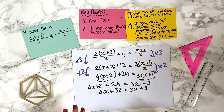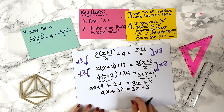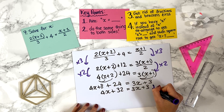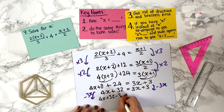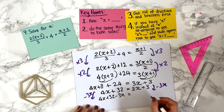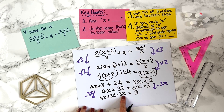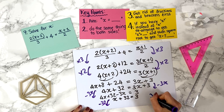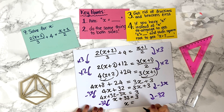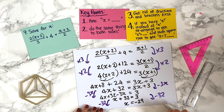Now we collect all x's on the left hand side. We minus 3x from both sides: 4x minus 3x plus 32 equals 3, which simplifies to x plus 32 equals 3. To get x on its own, we minus 32 from both sides: on the left we get x, and on the right 3 minus 32 gives minus 29. So x equals minus 29.